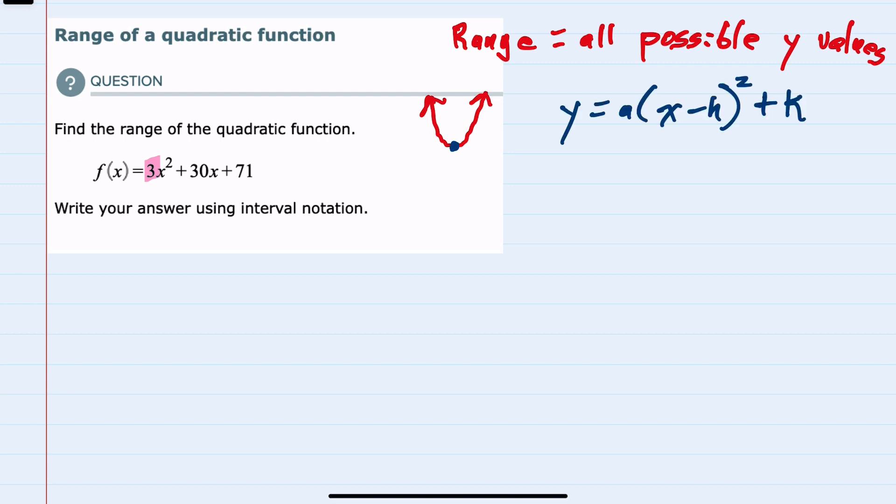If our quadratic was in the form y = a(x - h)² + k, we would easily be able to identify the vertex which is (h, k). Since this equation is not in the form that I want, I'm going to complete the square to write it in this form.